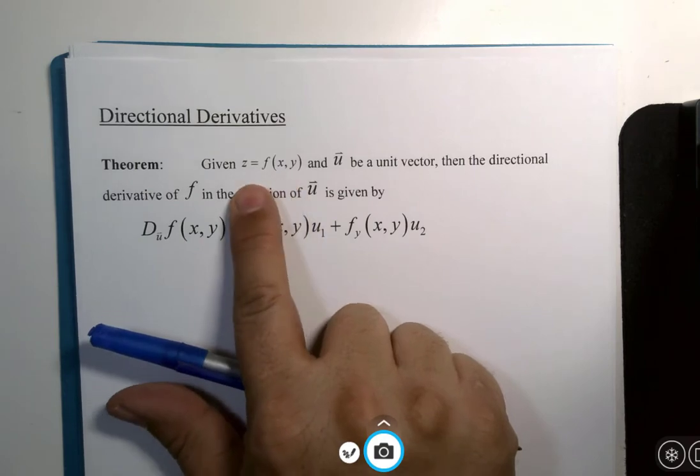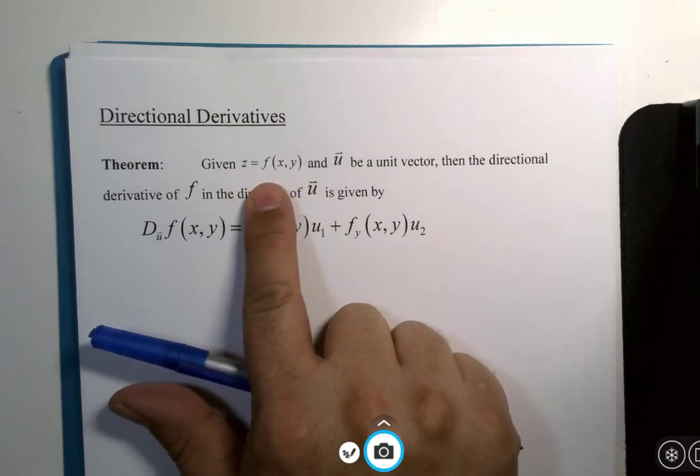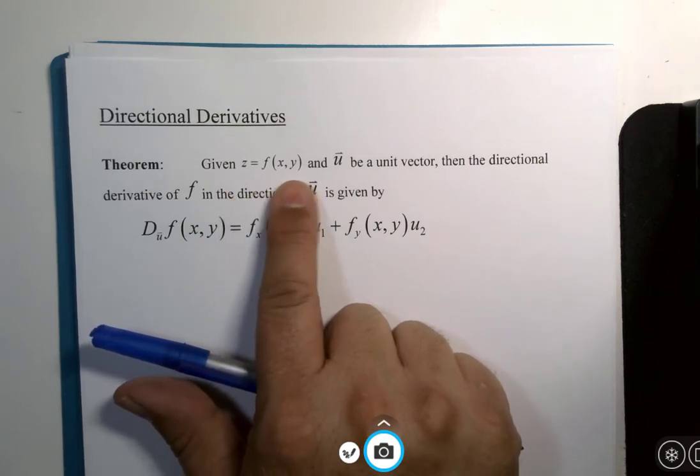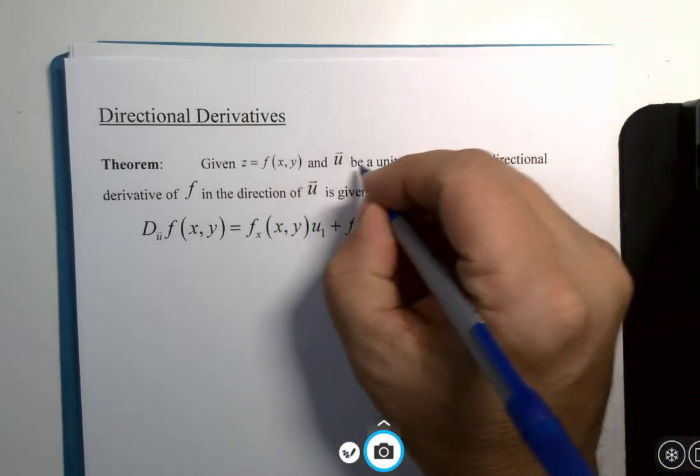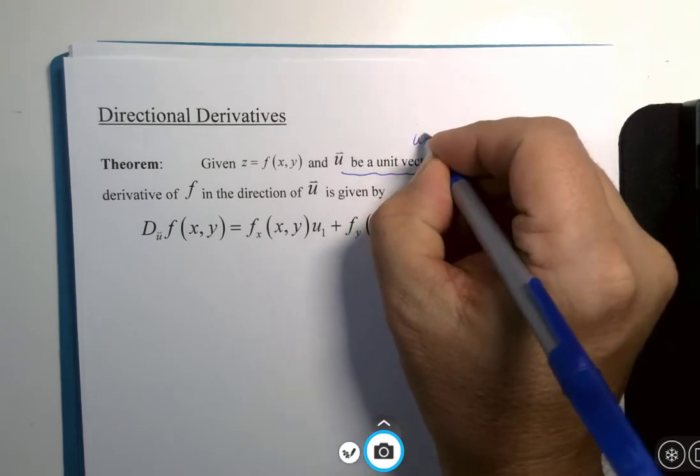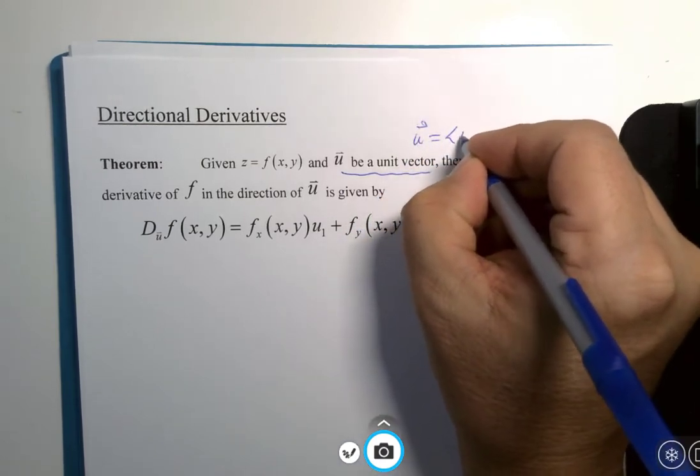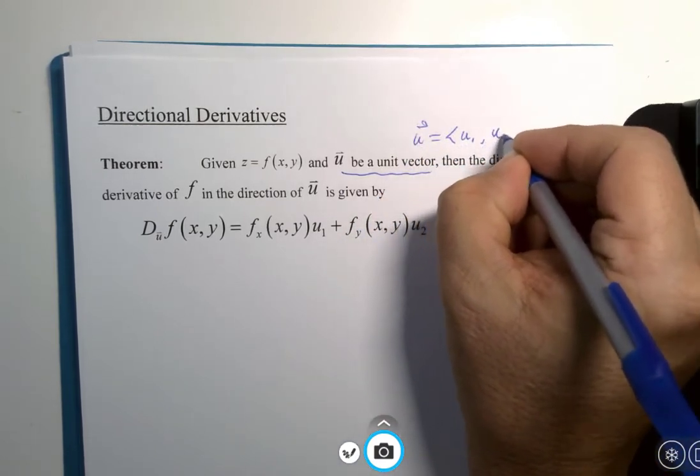So if we have a function z equals f of x, y, and it could be modified for more, and u is a unit vector, remember we had u is equal to components u1 and u2.